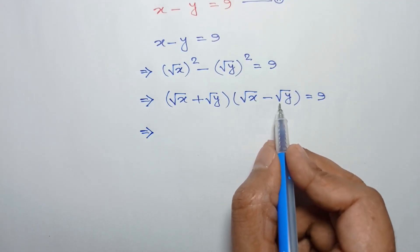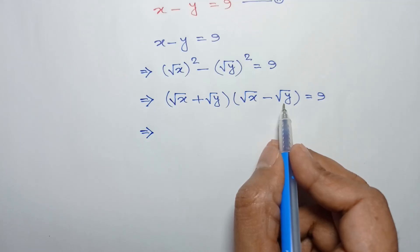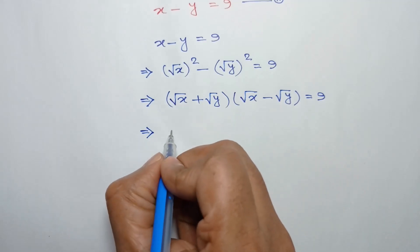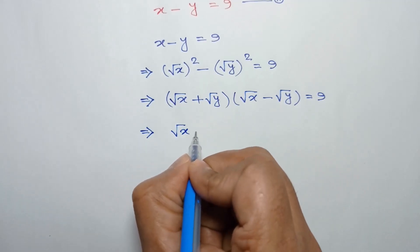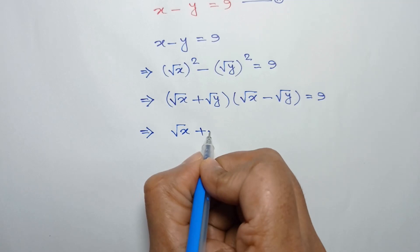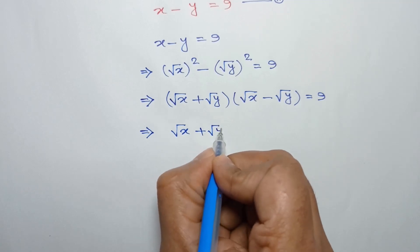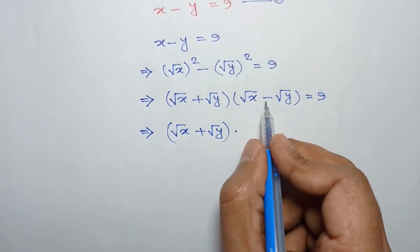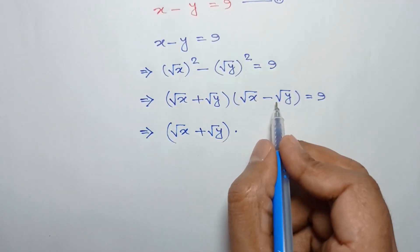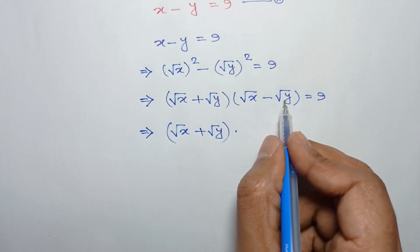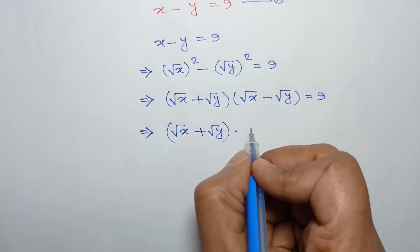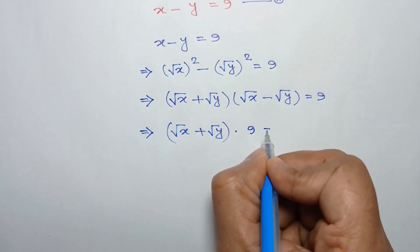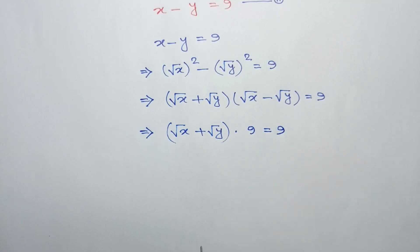Substituting the value of square root of x plus square root of y from equation 1, we get 9 times square root of x minus square root of y is equal to 9. So this 9 equals 9.